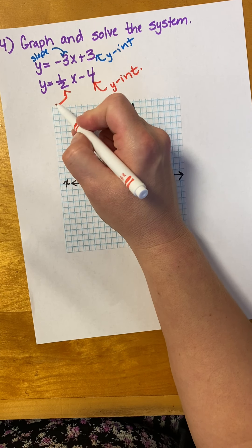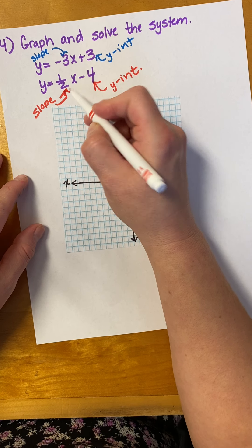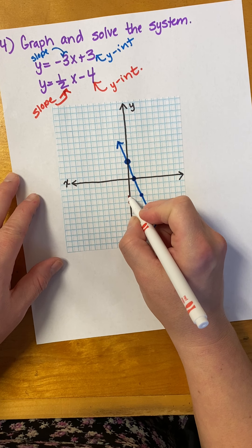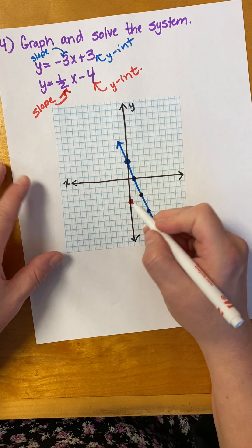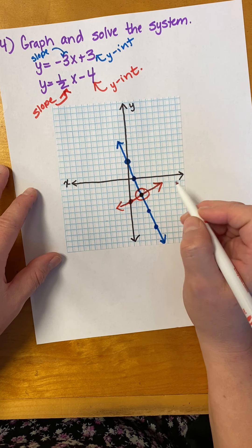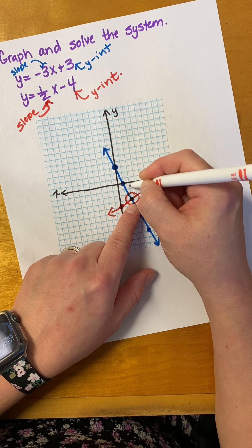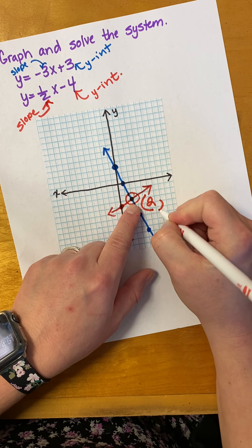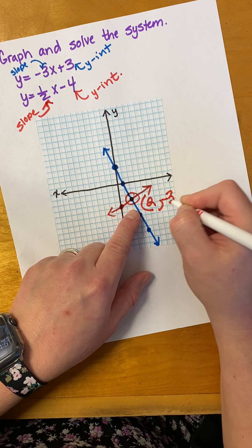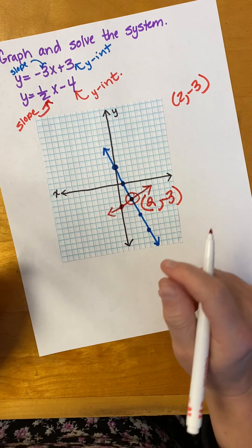For the second equation: the y-intercept is negative four, so I go down to negative four and put a point. Then the slope is one half, so I rise one and run two. I can already see where they intersect right here. What is this point? The x-coordinate is two, and the y-coordinate is negative three. So the solution is (2, negative 3).